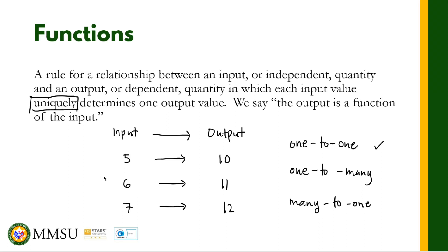For every input, unique yung output. Hindi pwedeng dalawa yung output sa isang input lang. Pero the other way around pwede. Hindi pwedeng marami yung output value sa isang input value lang. So kung one-to-one yung relation, then unique yung output value for every input value — ibig sabihin kapag one-to-one, this is a function. This is an example — itong nasa slide natin — five-ten, six-eleven, seven-twelve: one input corresponds to one output.